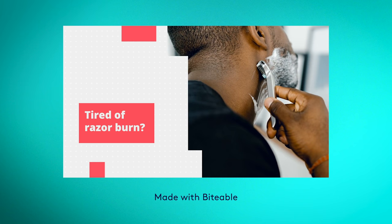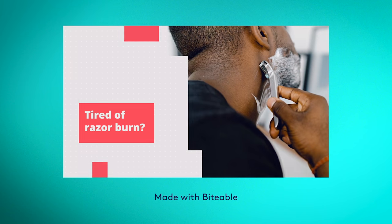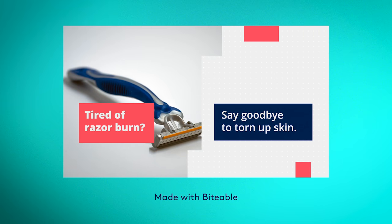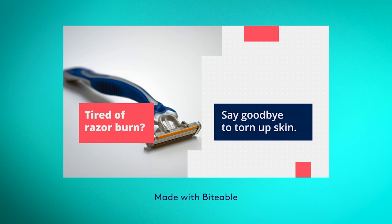And in the process, make their life better. Let's go back to the razor example. Let's say the problem we're solving is bad skin caused by razor burn. Start your ad by asking if the viewer is sick of looking bad because of razor burn. Then explain how your product will help them look and feel better by using your razor. You've just explained how your product improves their life — who doesn't want a better life?